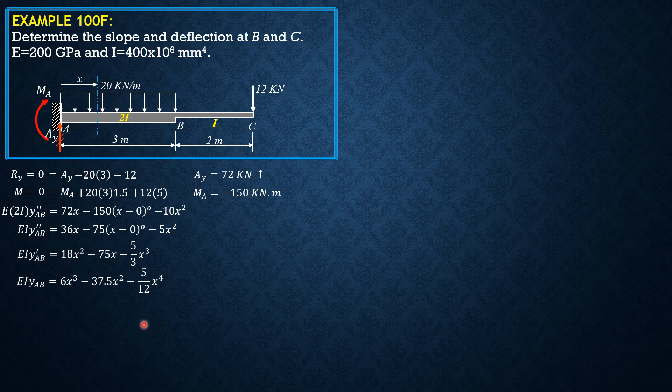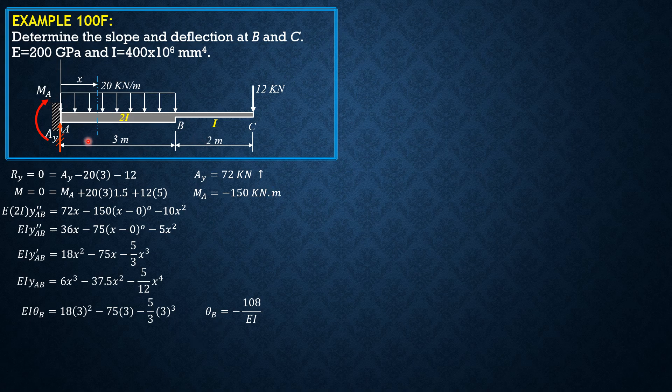We can now evaluate theta B by setting value here to X equals 3. So EI theta B equals 18 times 3 squared minus 75 times 3 minus 5 thirds 3 cubed. So solving for theta B, theta B equals negative 108 over EI. Of course, it's negative because it is sloping downward. The tangents are sloping down to the right. That's a negative slope.